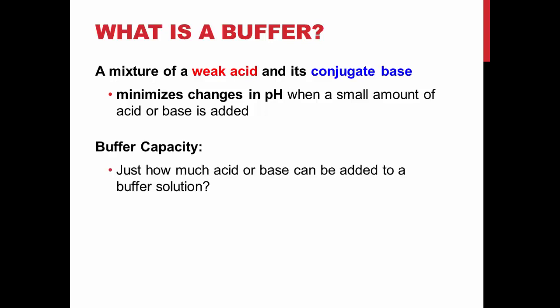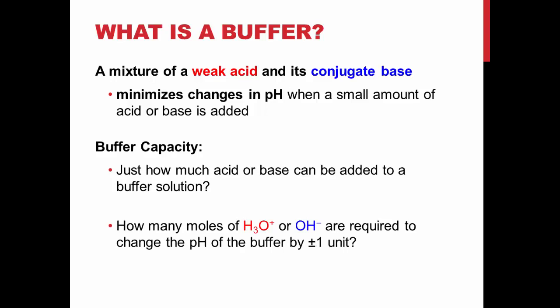The amount of acid or base that can be added without significantly changing the pH is called the buffer capacity. The capacity of a buffer is specifically described as being the number of moles of hydronium or hydroxide ions required to change the pH of the buffer solution by plus or minus one pH unit.